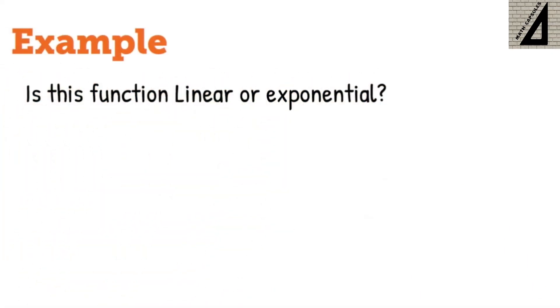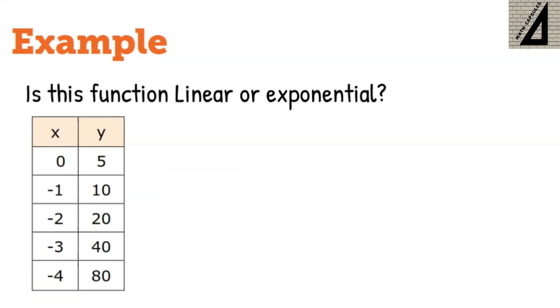Another example: you have another table and are asked to determine whether it is linear or exponential. If you look at the y values, you'll find it is multiplied by 2 each time. 5 times 2 is 10, 10 times 2 is 20, and so on. While x values are decreasing by 1 each time, so while x is decreasing, y is increasing multiplied by 2. This means this is an exponential function.